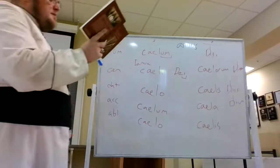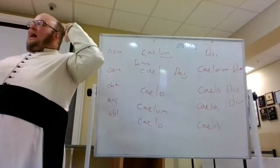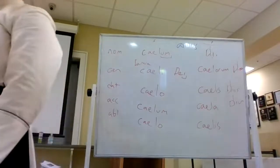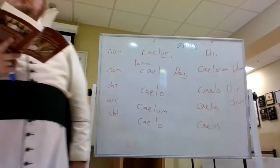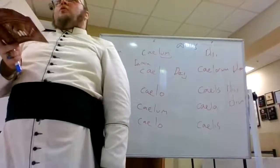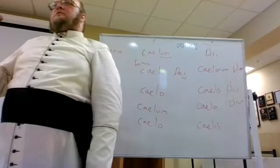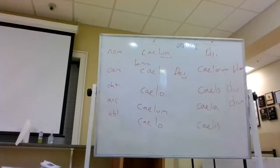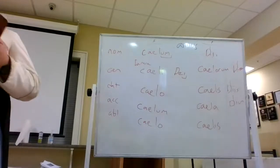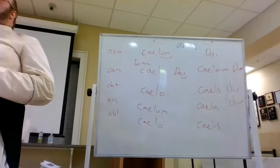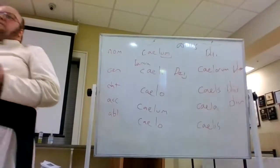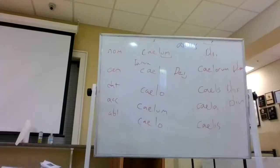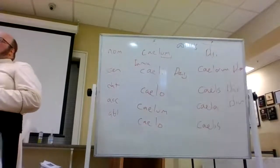Now we have some actual sentences. Servus bonus est — the servant is good. We could also say est servus bonus, bonus est servus, and it would all mean the same thing; you'd use context to figure out what's going on. Filii boni esse possunt — the sons are able to be good. Posunt is plural. Sancti apostoli — the holy apostles. In the old rite, the Confiteor included: sanctis apostolis Petro et Paulo — I confess to the holy apostles, Peter and Paul.